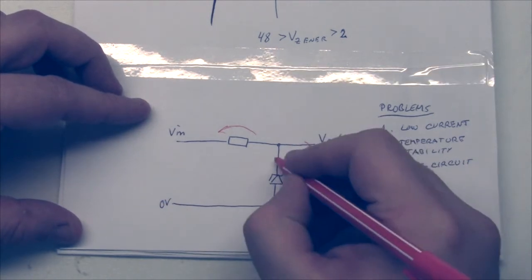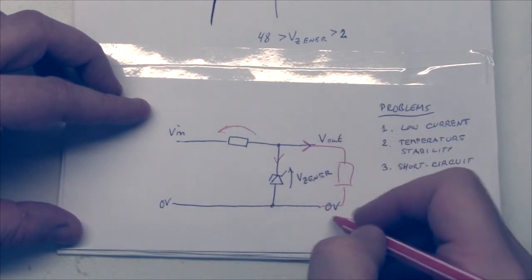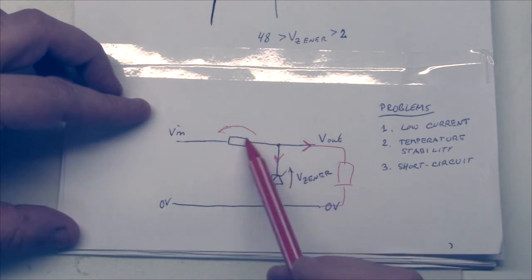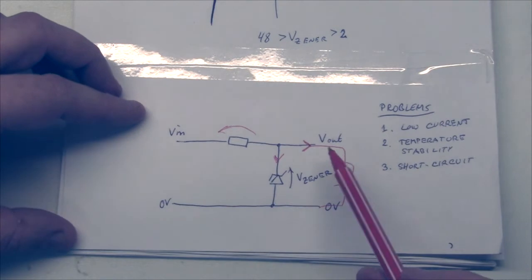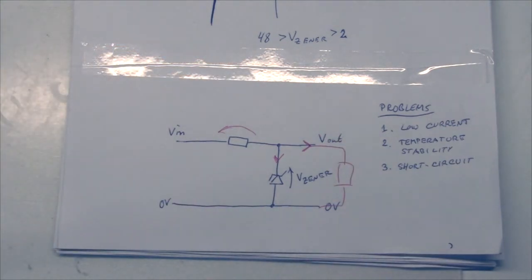So two issues. First of all, you need quite a lot of current running through there to draw a small current through your equipment, and that is not very efficient. Secondly, because of the current through this resistor, it will get very hot. So this solution is only used for very low cost stuff and where you draw very small currents.